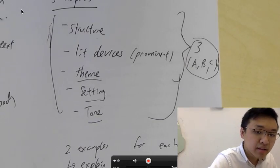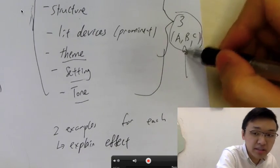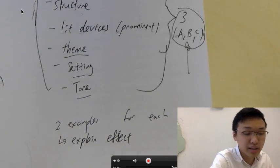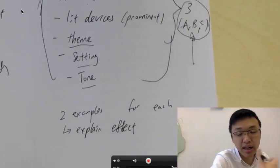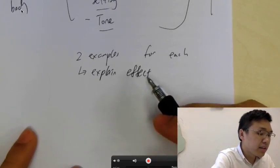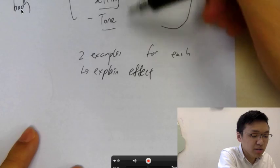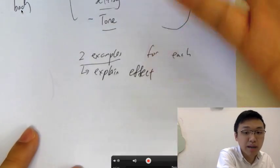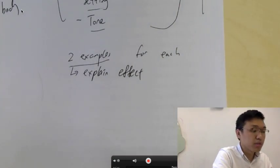And then you focus on talking about these three, A, B, and C. You don't talk about anything else. Because the IOC is only eight minutes long, you can't talk about everything, so you just focus on three. And then you also want to, for each of the aspects, you need to have at least two examples to back it up, and you need to explain the effects of those examples.